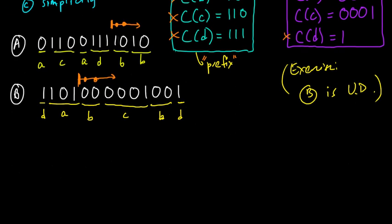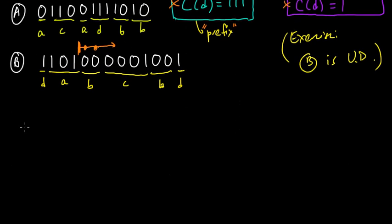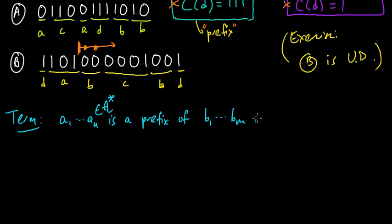So let's make that, let's write down formally what I just said. So terminology, prefix A1 to say N, and this is a sequence, this is a string in A star, is a prefix of, let's say B1 to BM, if N is less than or equal to M, and A1 to N equals B1 to N.